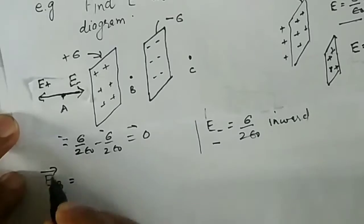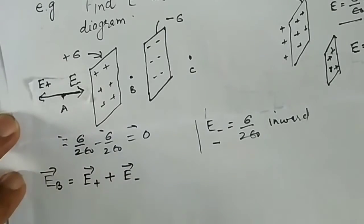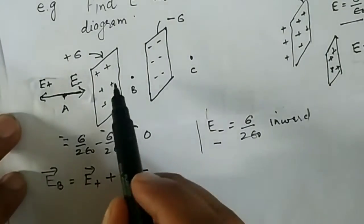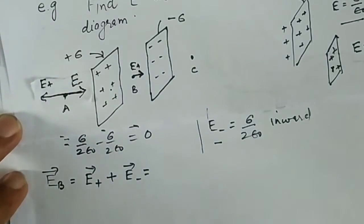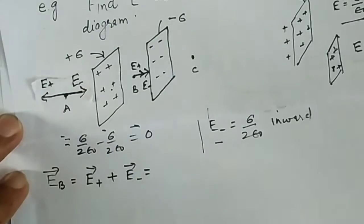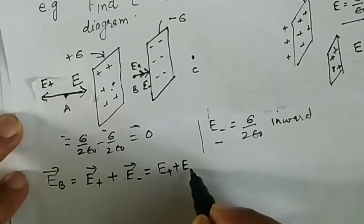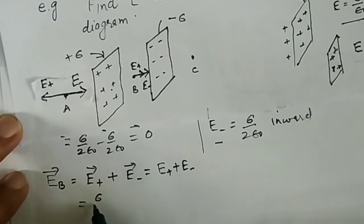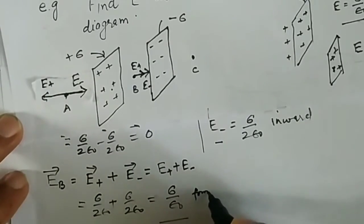Now let us calculate the electric field at point B. The electric field at point B equals the electric field due to the positive charge sheet plus the electric field due to the negative charge sheet at point B. At point B, the electric field due to the positive charge is directed outward (toward the right), and the electric field due to the negative charge is inward (also toward the right). Both are in the same direction, so the resultant is Sigma / (2 * epsilon_0) + Sigma / (2 * epsilon_0) = Sigma / epsilon_0, directed from positive to negative.